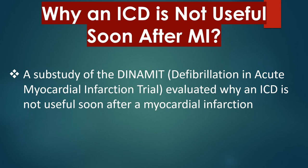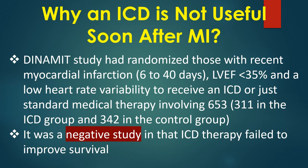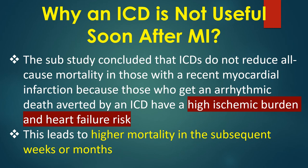A sub-study of the DINAMIT trial evaluated why an ICD is not useful soon after a myocardial infarction. DINAMIT had randomized those with recent myocardial infarction after 6 to 40 days, left ventricular dysfunction, and low heart rate variability to receive an ICD or standard medical therapy in 653 patients. It was a negative study in that ICD therapy failed to improve survival. The sub-study concluded that ICDs do not reduce all-cause mortality in those with recent myocardial infarction, because those who get an arrhythmic death averted by an ICD have a high ischemic burden and heart failure risk.